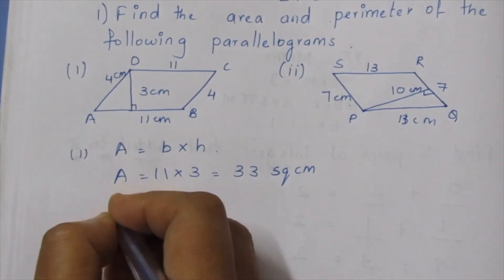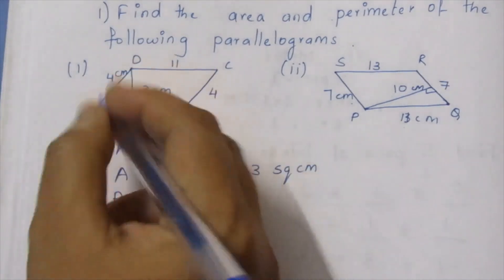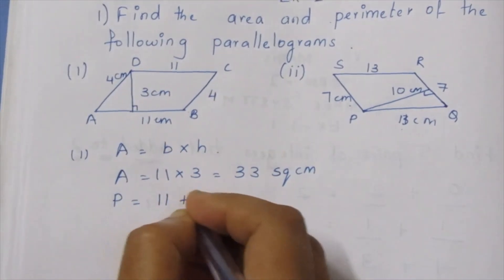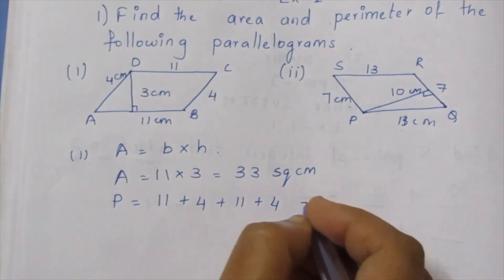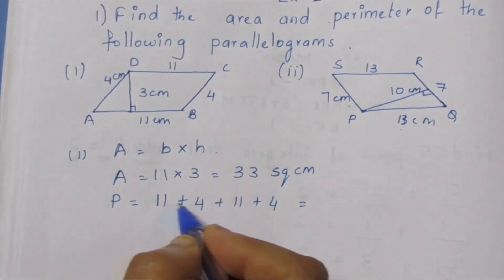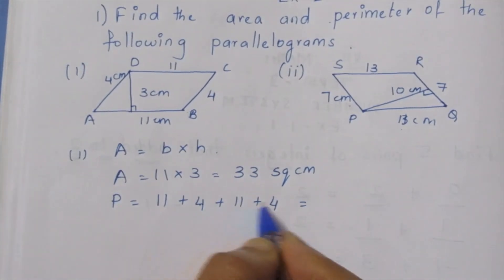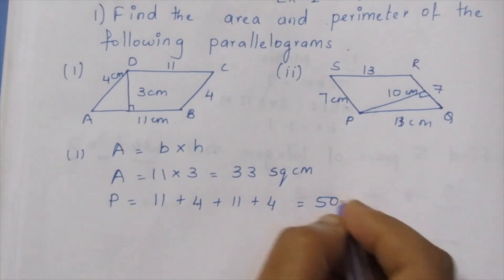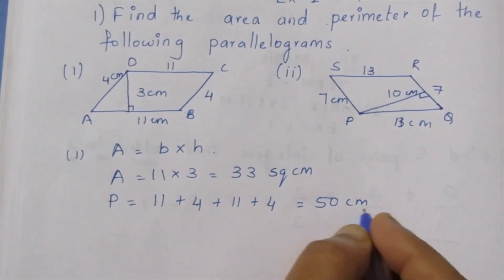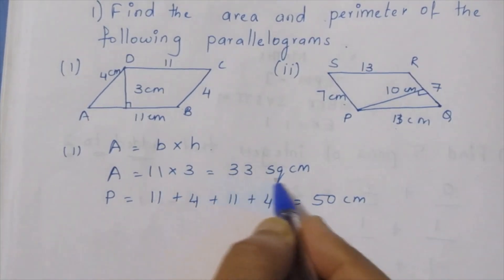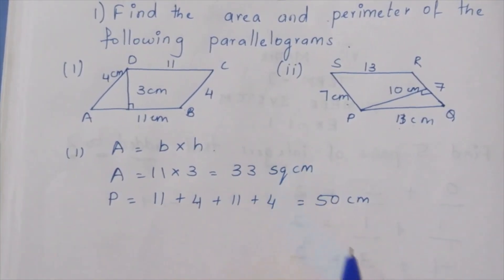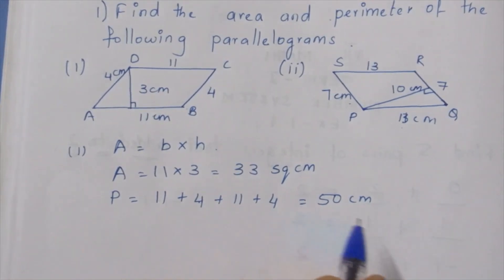Perimeter is equal to all boundaries added: 11 plus 4 plus 11 plus 4. Add to 25, 25, this is 25, 50. This is units just centimeter. This is multiplied centimeter, this is centimeter square. This is centimeter. Perimeter added: 50 centimeter.